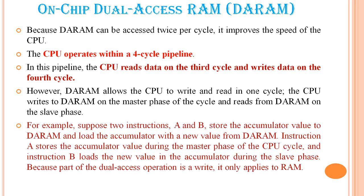For example, consider two instructions A and B: store the accumulator value to the DA RAM, and load the accumulator with a new value from DA RAM. Instruction A stores the accumulator value during the master phase of the CPU cycle, and Instruction B loads the new value to the accumulator during the slave phase — because this is part of the dual access operation. It only applies to RAM.